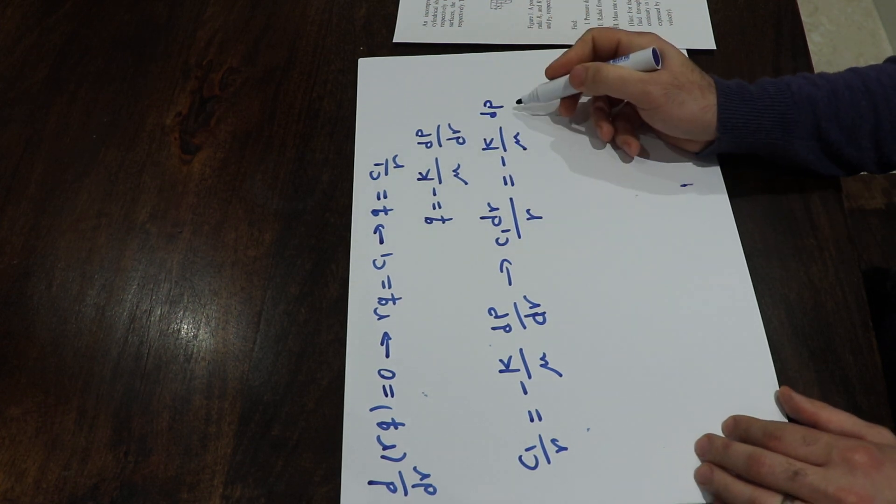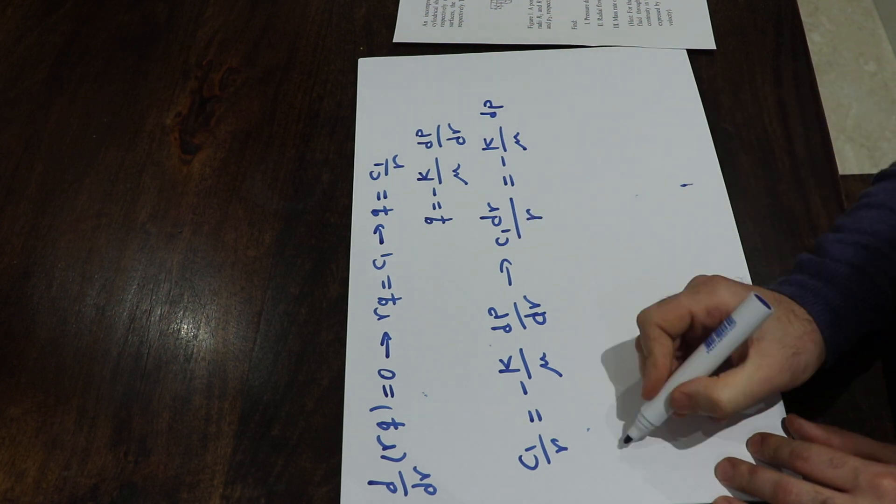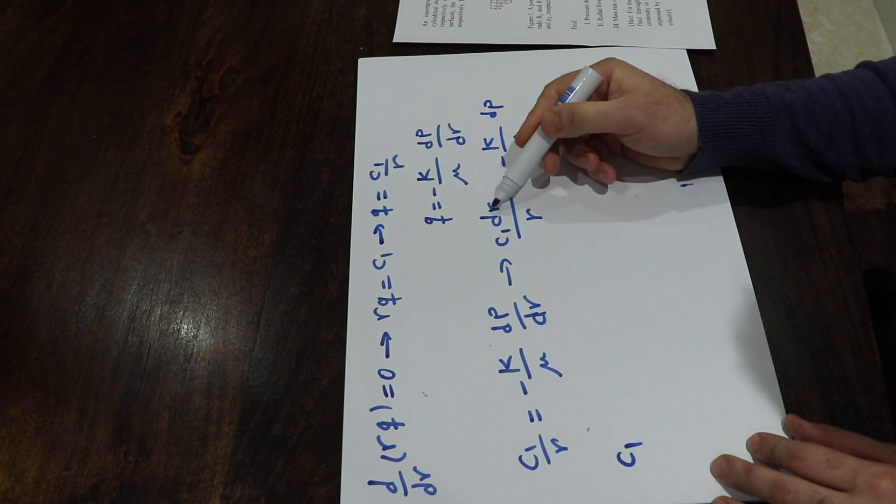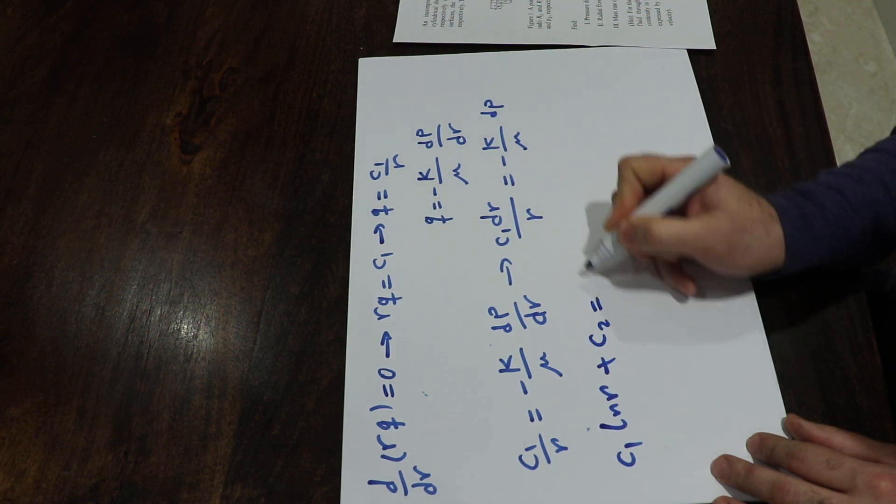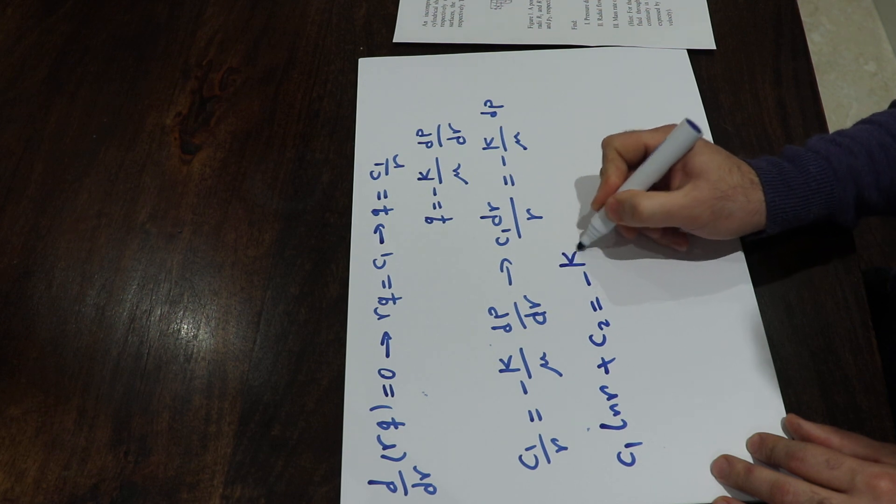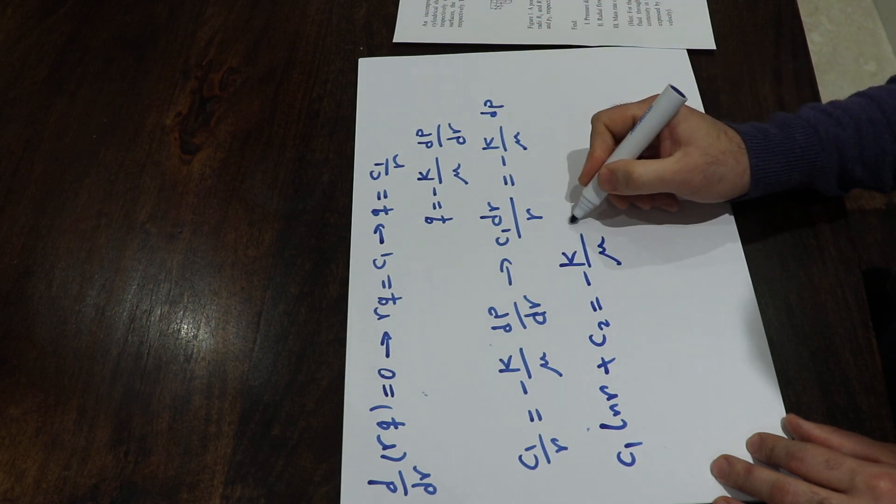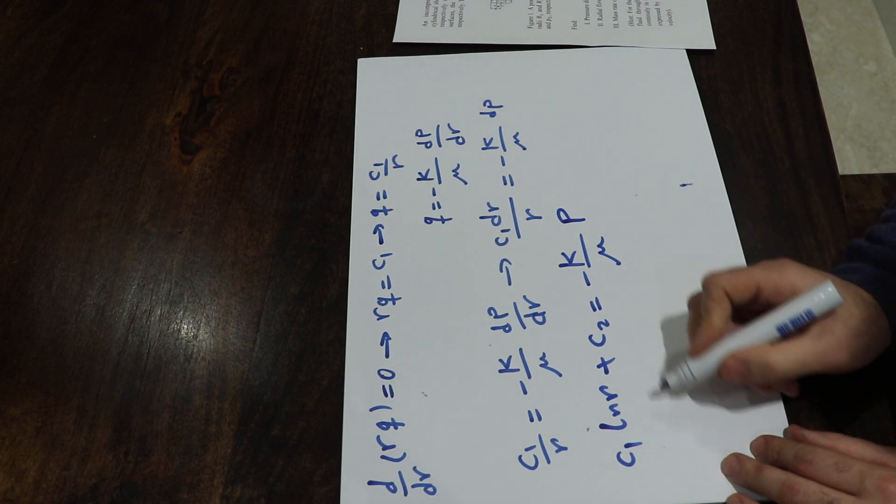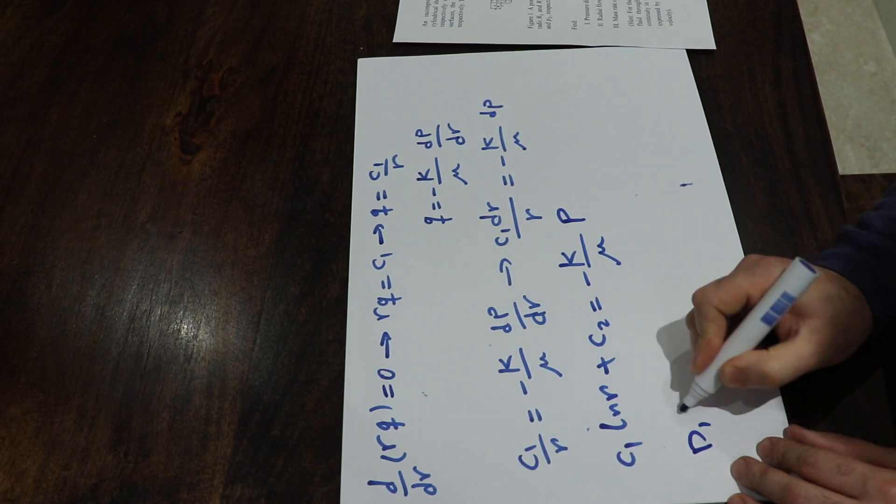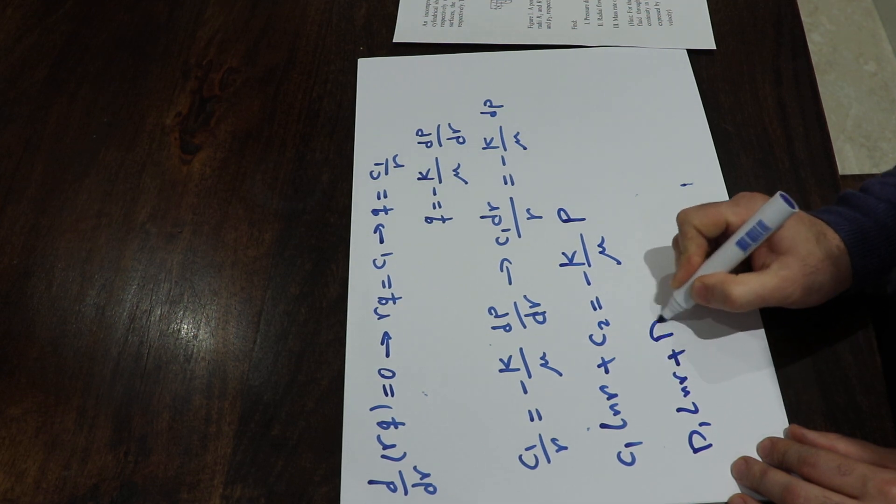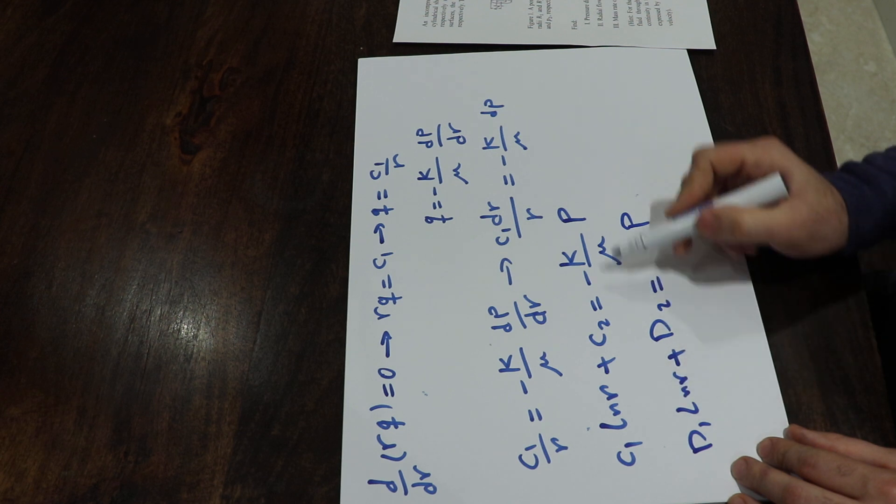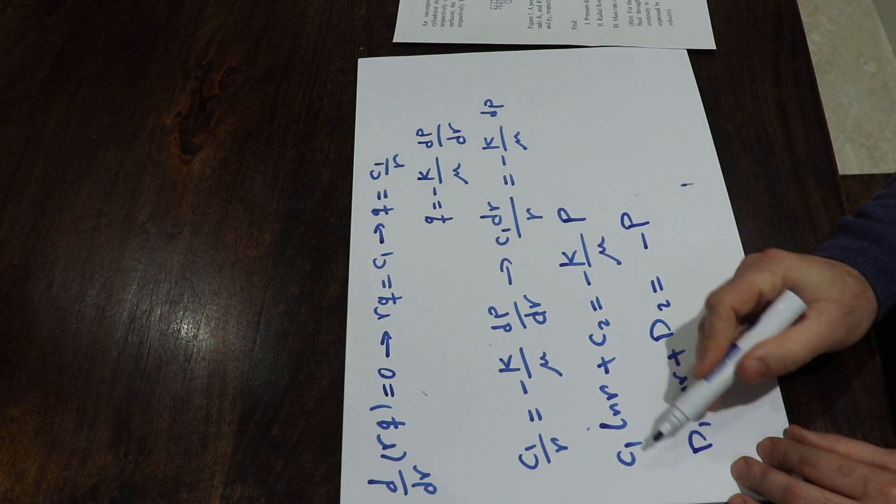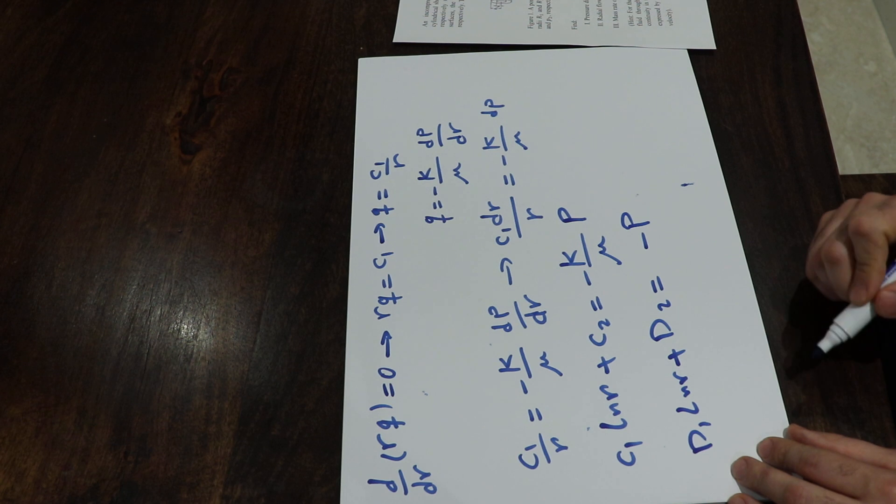Now you can take the integral from each side of this equation. C1 times the integral of dR over R will be equal to ln R plus a constant C2, which equals minus K/mu times the integral of dP, which equals P. This is the same as writing D1 ln R plus D2 equals minus P, because I can multiply each side by mu divided by K and name the new constants D1 and D2.